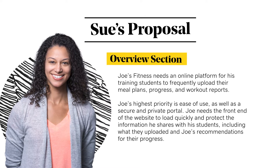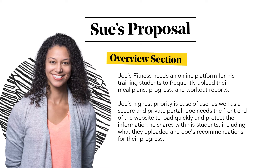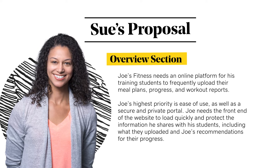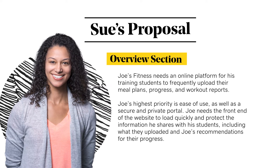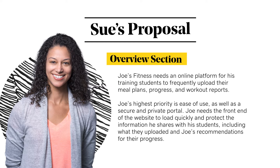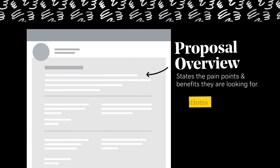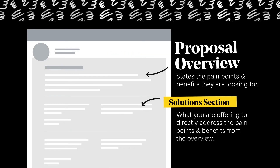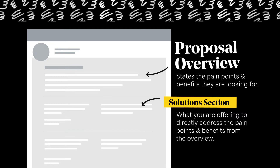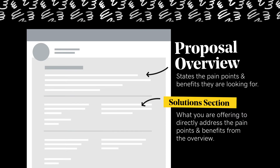Joe's highest priority is ease of use, as well as a secure and private portal. Joe needs the front end of the website to load quickly and protect the information he shares with his students, including what they uploaded and Joe's recommendations for their progress. A proposal should also have a solution section. The section will list all the solutions you are offering that directly address the pain points and benefits in your overview.